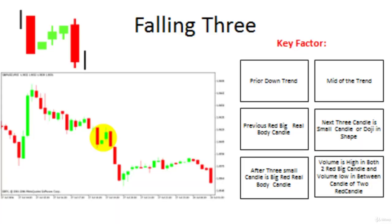Now we discuss another continuation pattern known as falling three. As the candlestick formation shows on your screen, there is a set of five candles. The first candle is a big red real body candle with very high volume. After that, there is a set of three candles which are small in size or doji in shape, all formed with low volumes. After the completion of those three candles, there is again a big red real body candle with high volumes, signifying that the trend will continue.